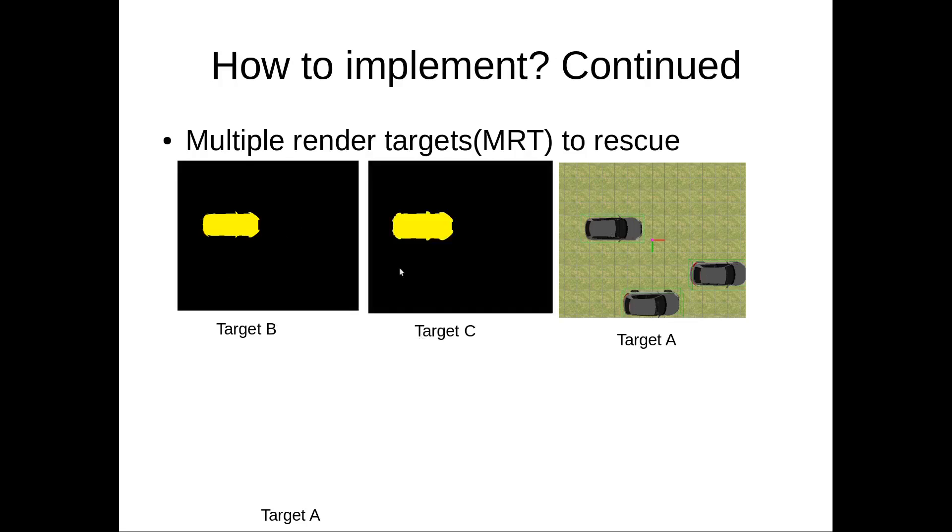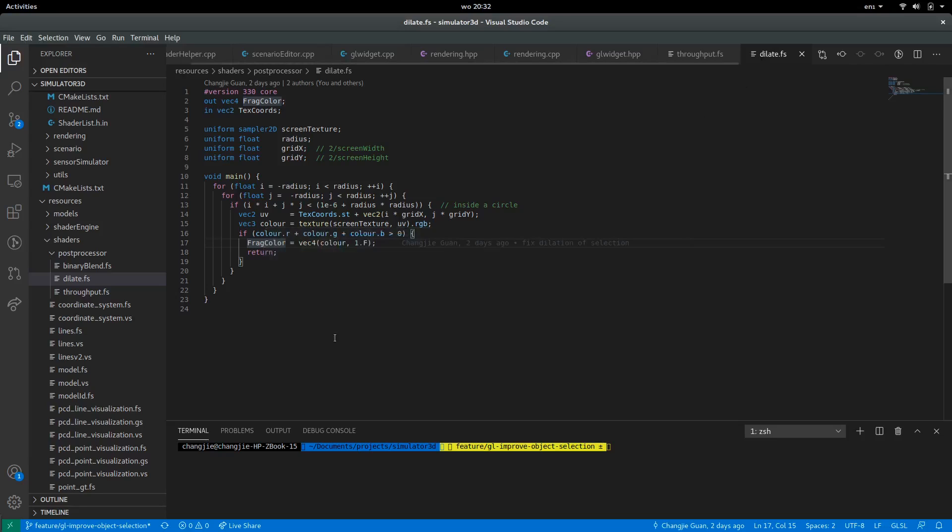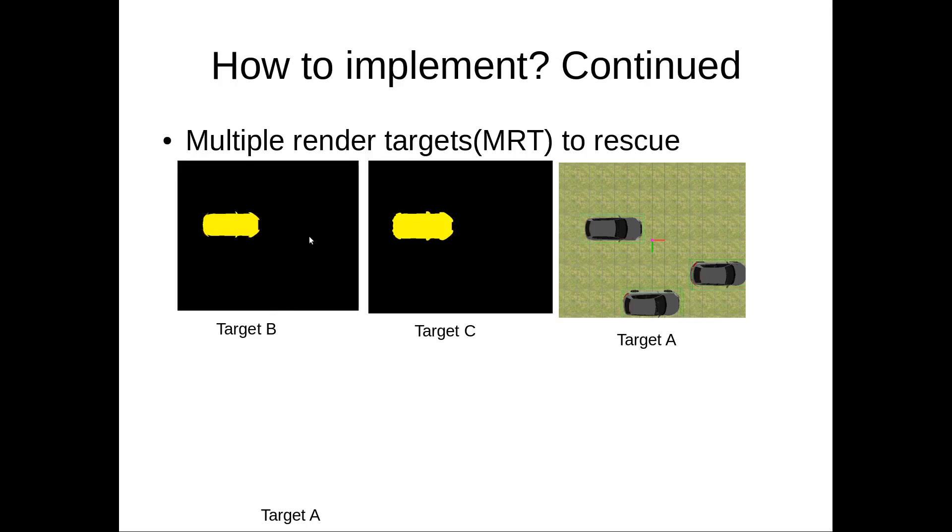Next, we have a target C. In target C, we apply the dilation shader. Here, so in this way, we can dilate the highlighted objects by its radius. So here, you can have a larger object.